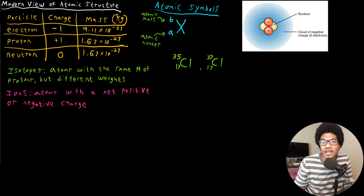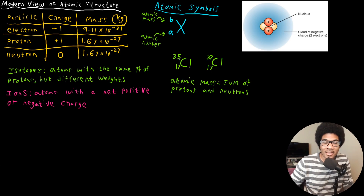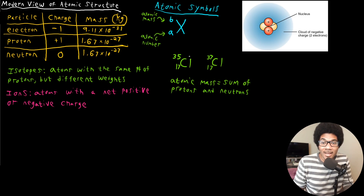A note about atomic mass: the atomic mass is the sum of the protons and neutrons. So for our chlorine examples, the 17 protons contribute their weight to the atomic mass, and the remaining contributions come from neutrons. The only difference between the two isotopes of chlorine is that chlorine-37 has two more neutrons than chlorine-35.